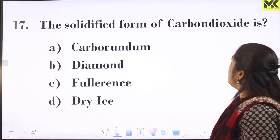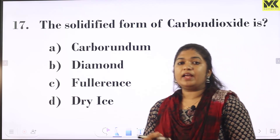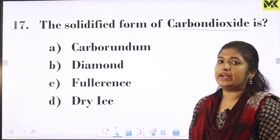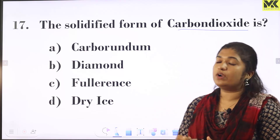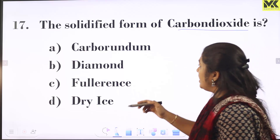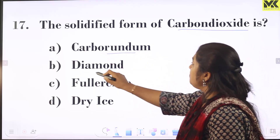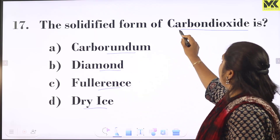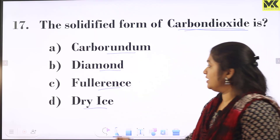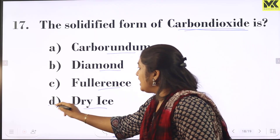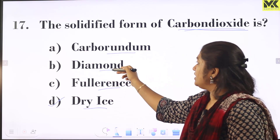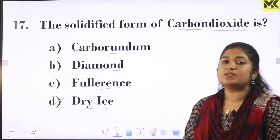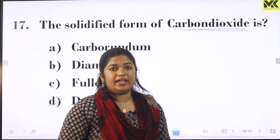The solidified form of carbon dioxide is called dry ice. Among the options — carborundum, diamond, fluorine, dry ice — dry ice is the solidified form of carbon dioxide, not a carbon allotrope.